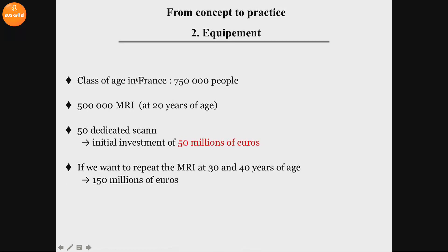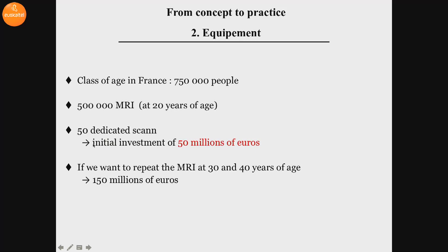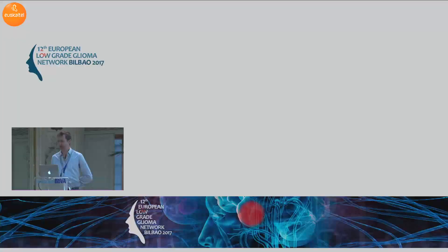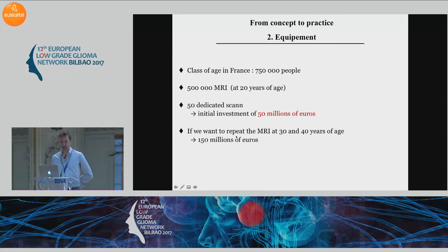Regarding equipment, if you want to screen a class of age in France — and given that two-thirds of people want to do this MRI — you need to screen about 500,000 people, and this would require 50 dedicated MRIs. There is an initial investment just for France of about 50 million euros, which is quite reasonable. But if you want to repeat the MRI at age 30 and 40, you need 150 million euros. So the equipment is feasible.